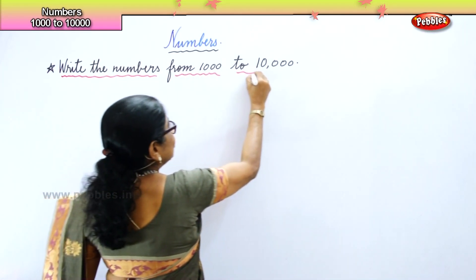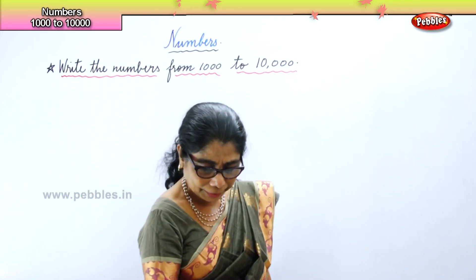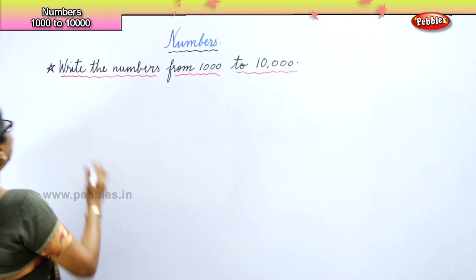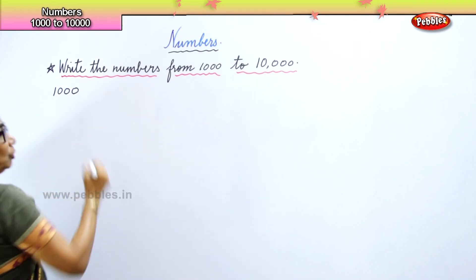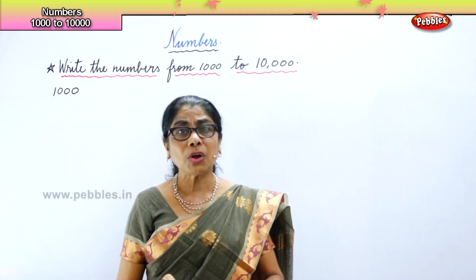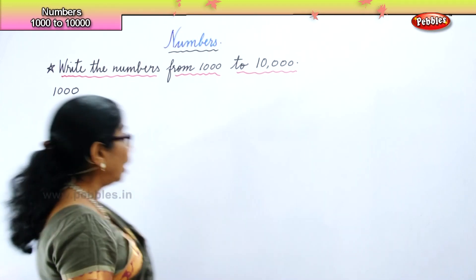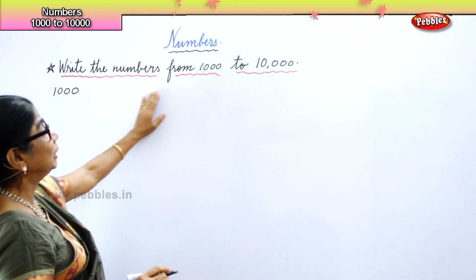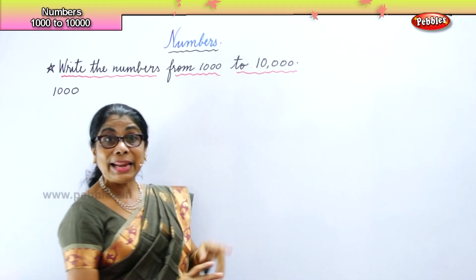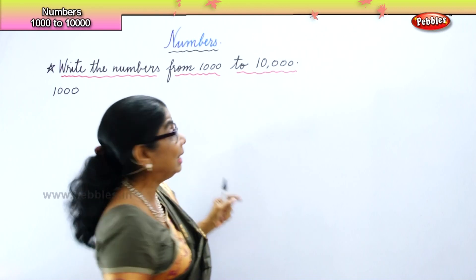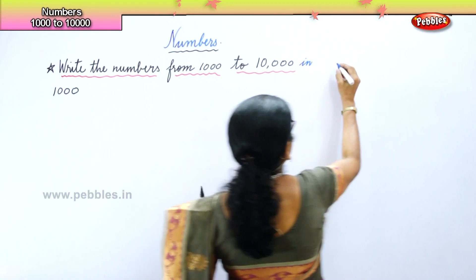Learning to write numbers carefully. We begin with one thousand — you already learned it. It's called one thousand. Now, write the numbers from one thousand to ten thousand in hundreds. You are going to write in hundreds.